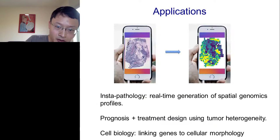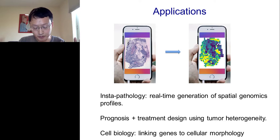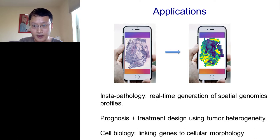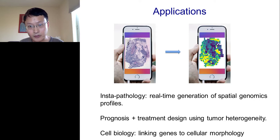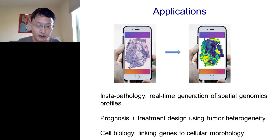The ultimate application of this technology that we're very excited about is to really think of this as an enabling platform. Sort of like Instagram filters, where if we look at one of the original histology images from a tumor, we can actually in real time have the algorithm generate the spatial transcriptome profiles for many of the key genes and overlay those spatial profiles on top of the original image like these filters. This can greatly enable prognosis and treatment design, especially where the tumor spatial heterogeneity is quite important. It also opens up new hypotheses of how specific gene expressions are linked to changes in cellular morphologies.